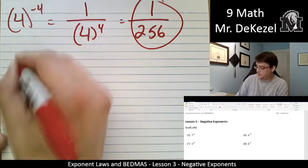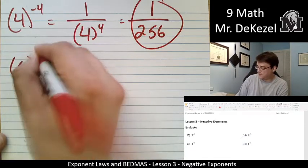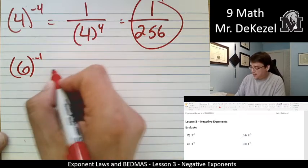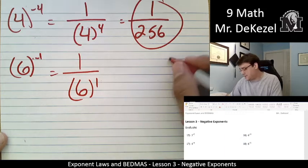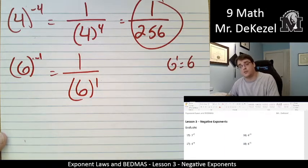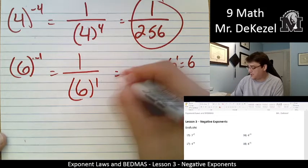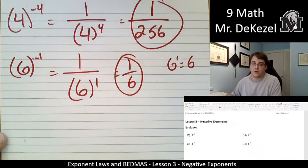Let's do the next one. 6 to the power of negative 1. So that is 1 over 6 to the power of 1. But 6 to the power of 1 is just 6. You don't multiply it by anything or by itself. So this is 1 sixth.